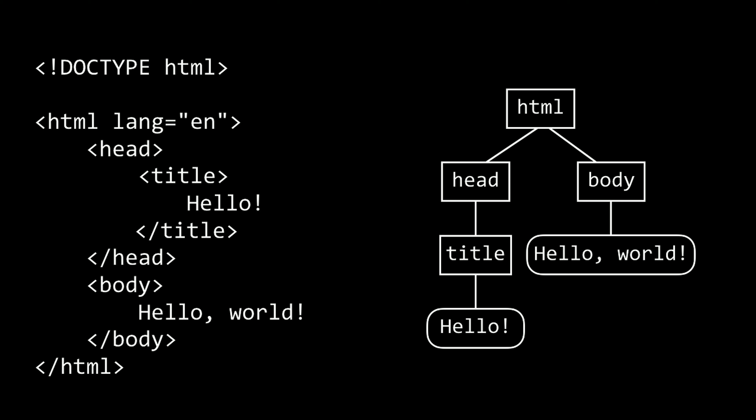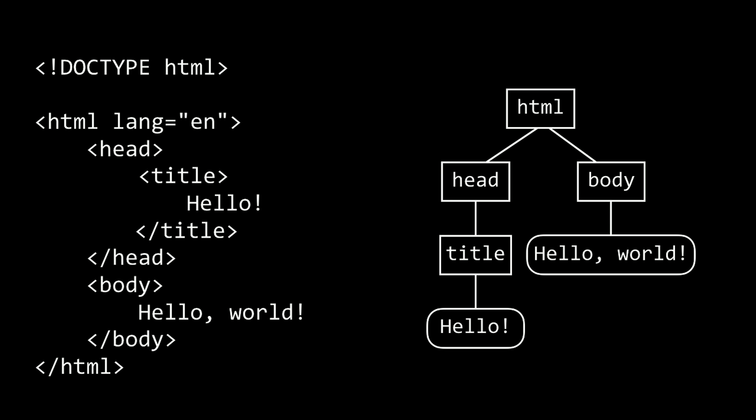The equivalent tree has HTML at the top, representing the whole page. Nested within the HTML element are two children: a head element and a body element — corresponding to the head tag and body tag in the HTML. Inside the head is the title containing the word 'hello', and inside the body is the text 'hello world'. This graphical representation — a model of elements nested within elements — is called the Document Object Model, or DOM.